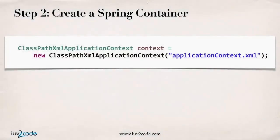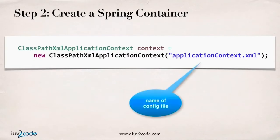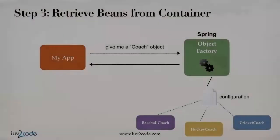Creating the Spring container: in this example I'm going to read an XML file on my class path, so I make use of ClassPathXmlApplicationContext. I construct this object and pass in the actual name of the configuration file — applicationContext.xml from step one. You can use any name you want, as long as you're consistent between step one and step two when reading that configuration file.